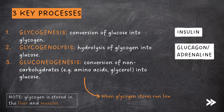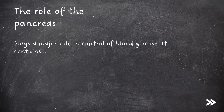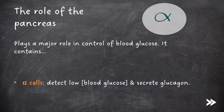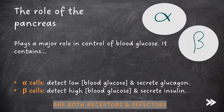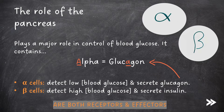Note that glycogen is stored in the liver and muscles. The pancreas plays a major role in the control of blood glucose. It contains alpha cells, which detect low concentrations of blood glucose and secrete glucagon, and beta cells, which detect high concentrations of blood glucose and secrete insulin. Both alpha and beta cells act as both receptors and effectors. To remember which type of cell secretes which hormone: alpha cells secrete glucagon — both have A's within their name.